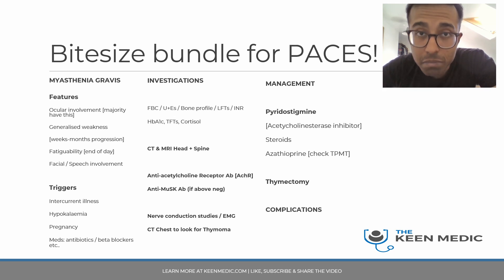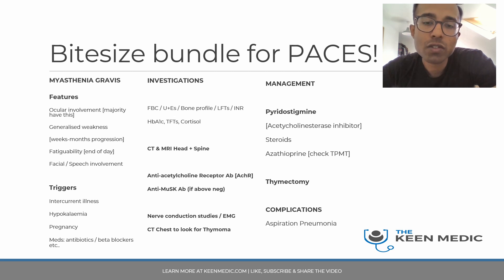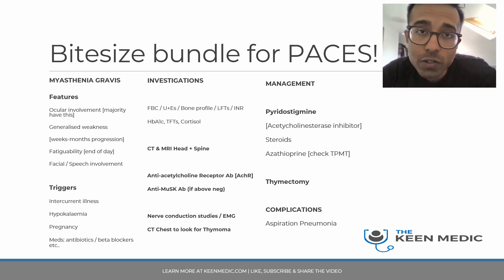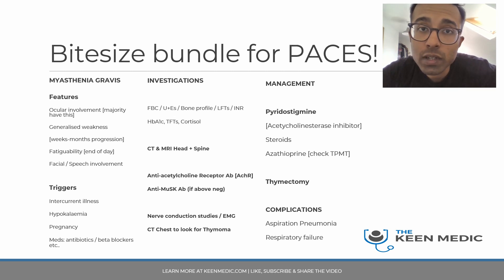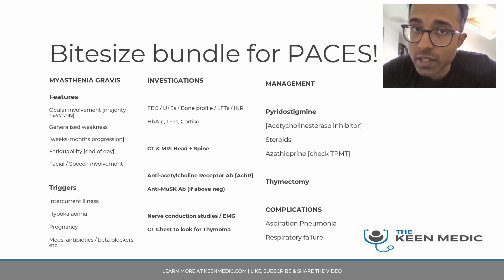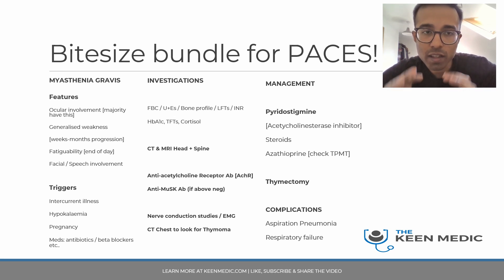Thymectomy: if they have got a thymoma, you would need to refer them to the surgeons for a thymectomy. However, in some patients, even without an enlarged thymus gland, thymectomy may still be considered because some have been shown to have benefit. Complications in myasthenia are mainly respiratory - aspiration pneumonia can happen because of impaired swallow and speech. They can also progress to respiratory failure and may need ventilatory support, which is why early ITU intervention is needed if a patient comes in with a crisis episode and is in respiratory failure.